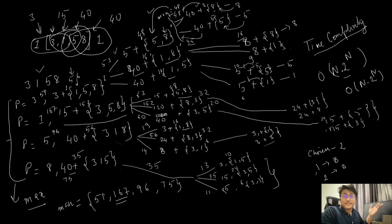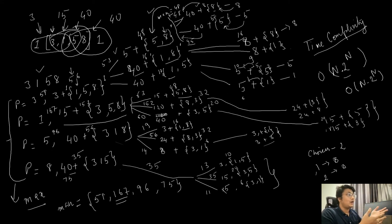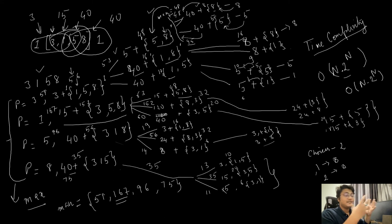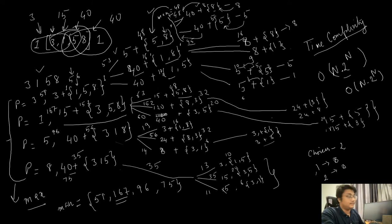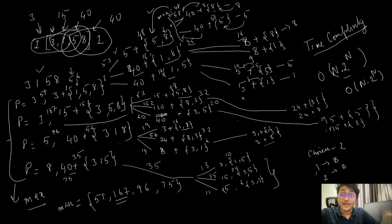In this video we saw how to draw the naive recursion tree for the Burst Balloons problem. In the next video we'll look at an optimal dynamic programming solution—both the recursion tree approach and the bottom-up approach—and how to reduce the time complexity. If you like this video please subscribe and leave questions in the comments.